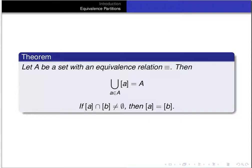Now we want to reformulate that theorem. Let A be a set with an equivalence relation. Then the union of all the equivalence classes for each element of A equals the entire underlying set A. And if the intersection of the equivalence class of a and the equivalence class of b is not empty, then the equivalence class of a equals the equivalence class of b.